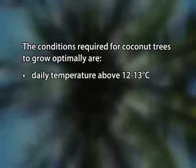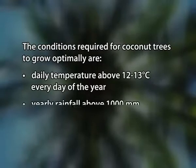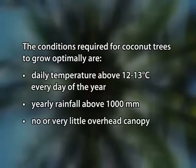Now the natural habitat of coconut palm. The coconut palm thrives best on sandy soils and is highly tolerant of salinity. It prefers areas with abundant sunlight and regular rainfall. Coconuts also need high humidity for their optimum growth. The conditions required for coconut trees to grow optimally are: first, mean yearly temperature above 12 to 13 degrees Celsius every day; second, mean yearly rainfall above 1000 millimeters; and lastly, no or very little overhead canopy.